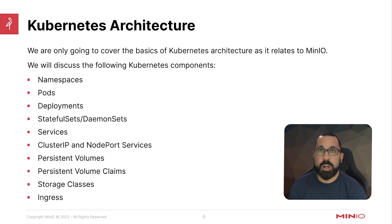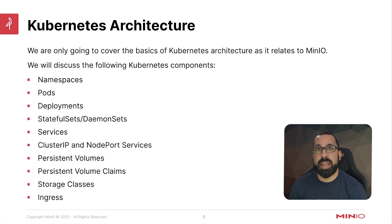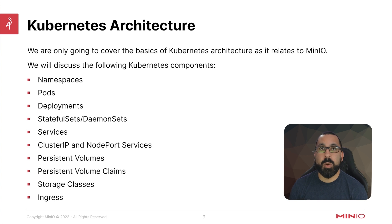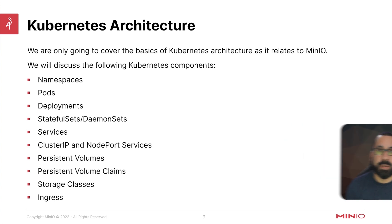And lastly, we'll talk about ingress, which is specifically used for pointing DNS names at your cluster and being able to have that route automatically inside your cluster to the appropriate endpoints, whether that be your MinIO management console or any of your tenants inside your cluster.